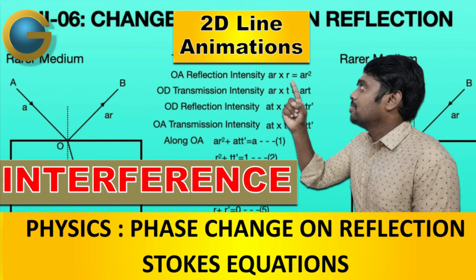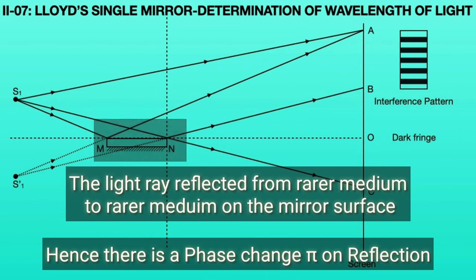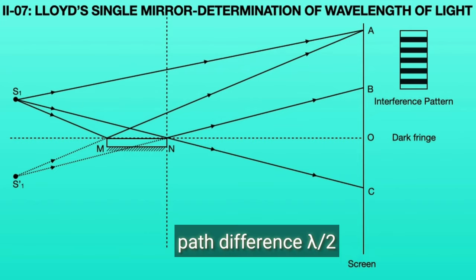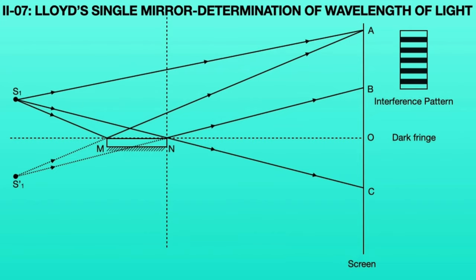This phase change topic was discussed in the last class; if you have any doubt, please look at that video. Due to the reflection from rarer medium to rarer medium on the mirror surface, an extra phase change of π is formed between S1 and S1 dash light rays — that is, a path difference of lambda by 2. Due to this path difference of lambda by 2 at N on the screen, the central fringe becomes a dark fringe.